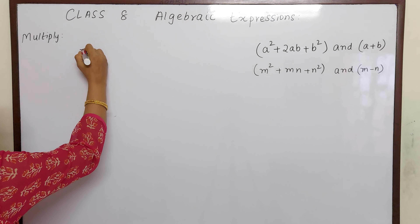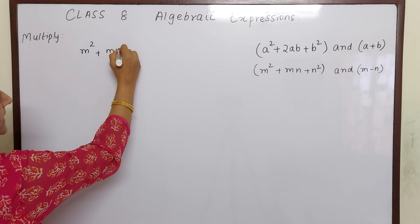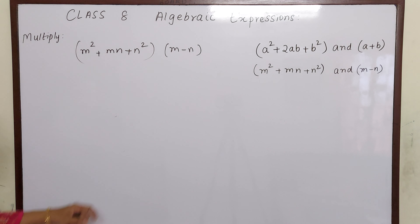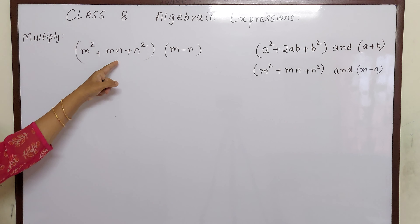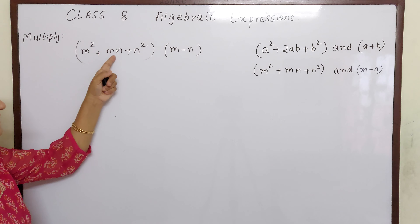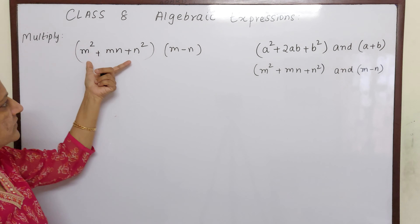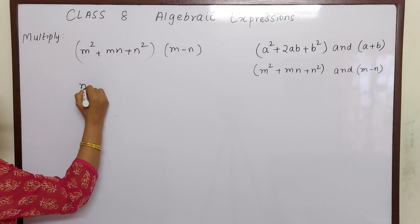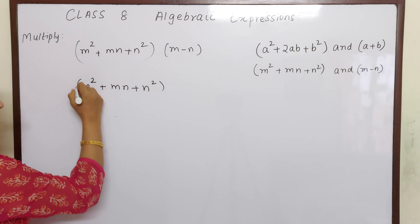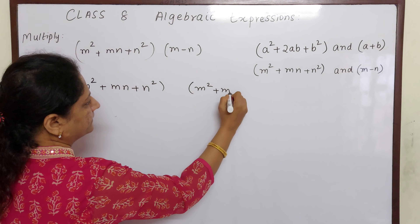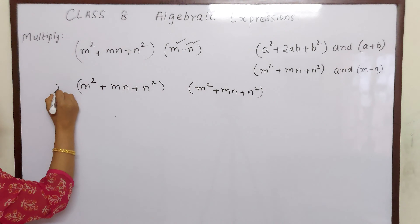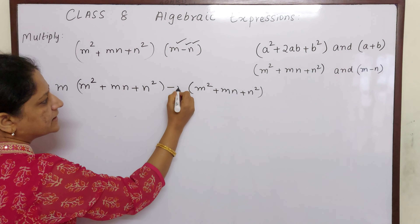Now let us move to the last sum: m² + mn + n², multiplied by m − n. We will write m² + mn + n² two times. If you put m − n twice in a bracket, you'd have to write 3 terms; so instead we write the trinomial twice. Then m goes here and minus n goes here.